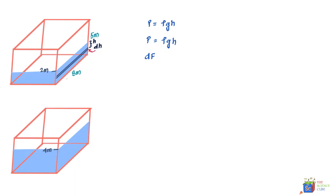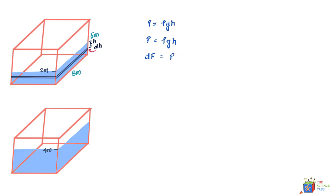This entire layer of water pushes against the wall, causing the pressure and therefore the force. The differential force exerted by this layer on the wall is the product of pressure at this level and the area of the strip, which is 8·dH. So dF = ρgh × 8·dH.